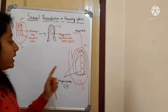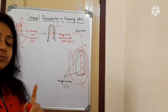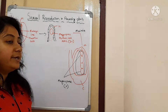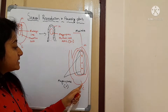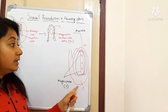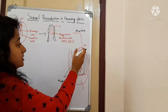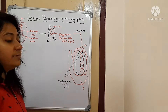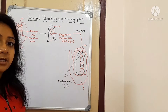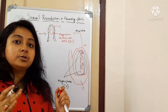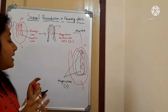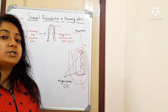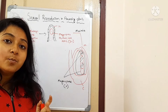Out of these four megaspores, only one megaspore will remain functional and the rest of the three will be degenerated. The one megaspore which is present at the chalazal end will remain functional, and the three megaspores near the micropylar end will be degenerated. So only one megaspore will remain functional, and from this one megaspore the formation of the embryo sac will happen.